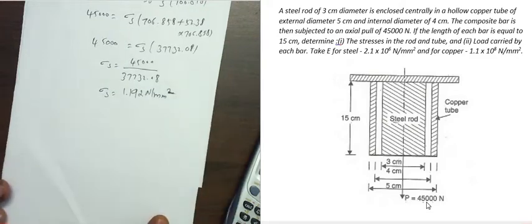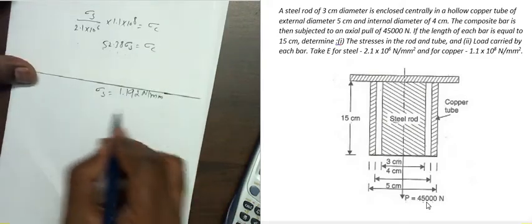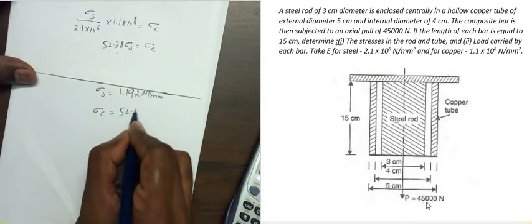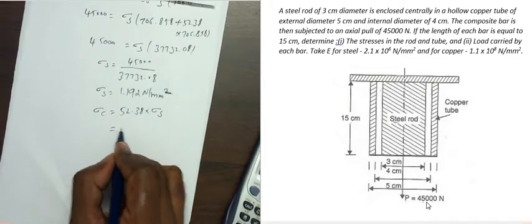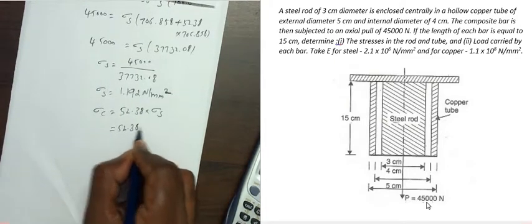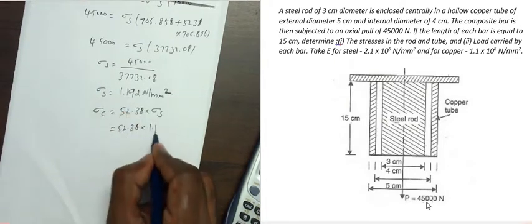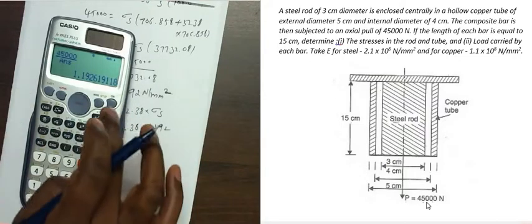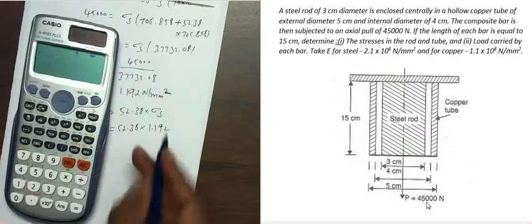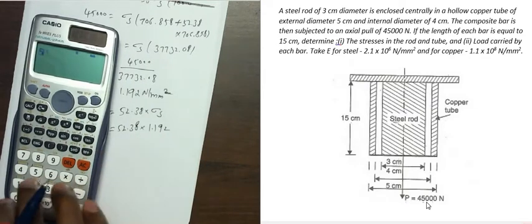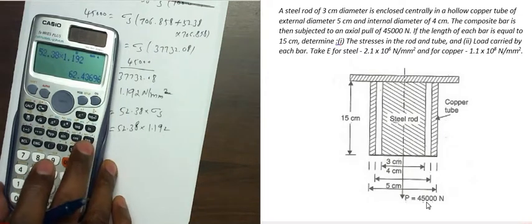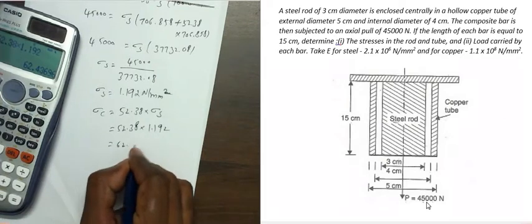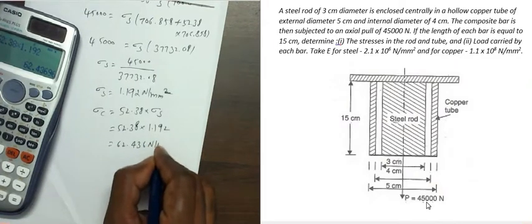Now, using the relationship σC = 52.38 × σS: σC = 52.38 × 1.192 = 62.436 N/mm². This is the stress in the copper tube.